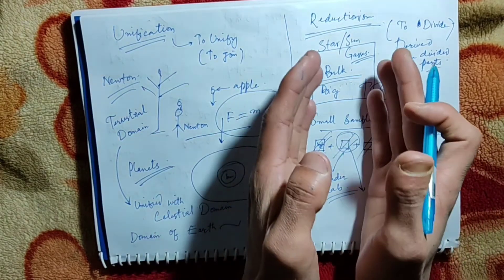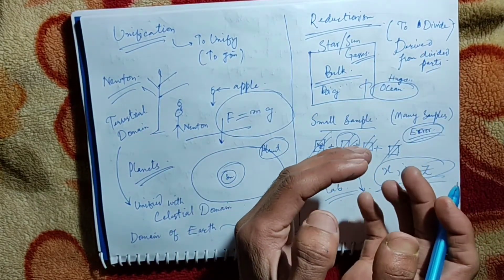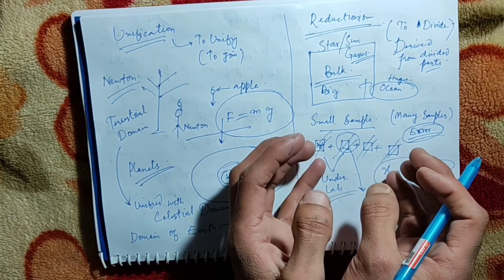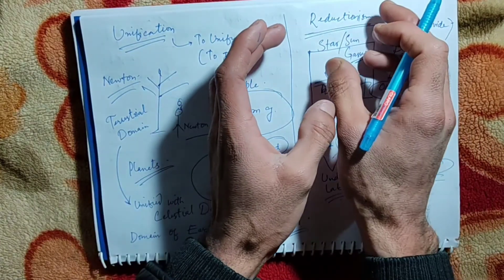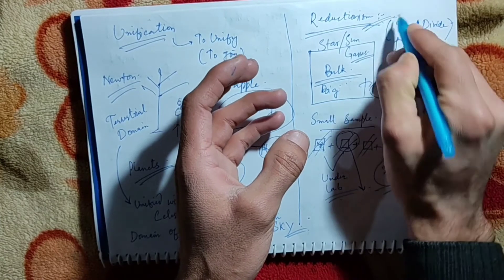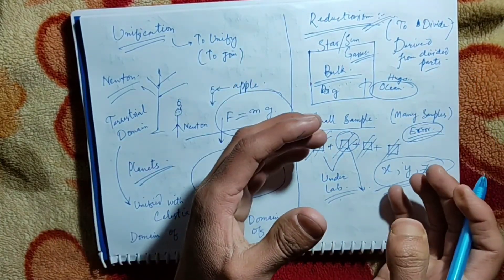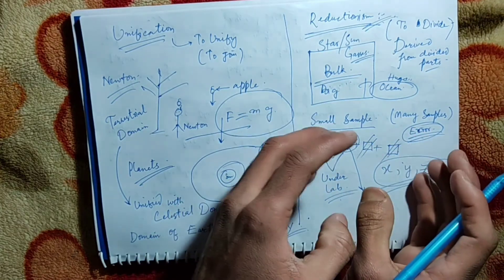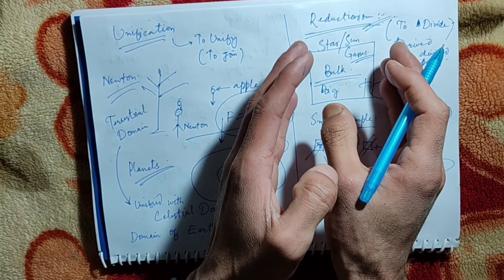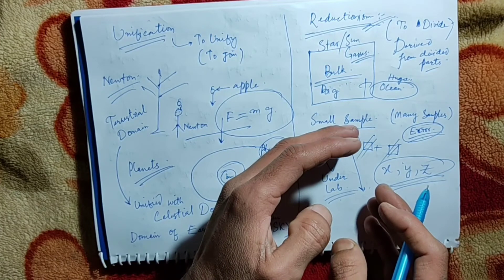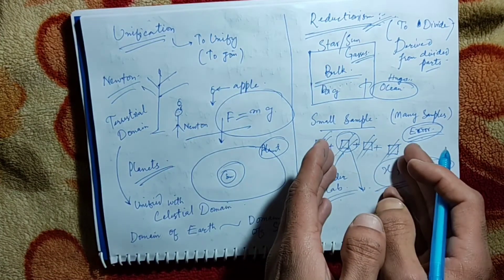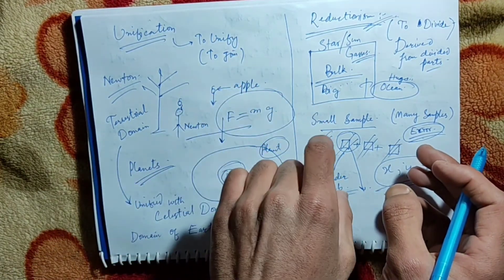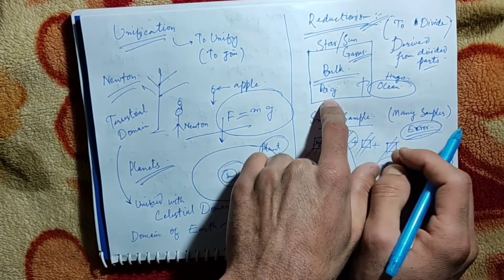So reductionism means we reduce a huge system into smaller ones and conclude that whatever is going on in these small samples must also be followed in the parent source. We reduce the parent into smaller samples, observe them in the lab, draw conclusions, and determine that these laws and phenomena must be taking place in a similar fashion inside the parent source.